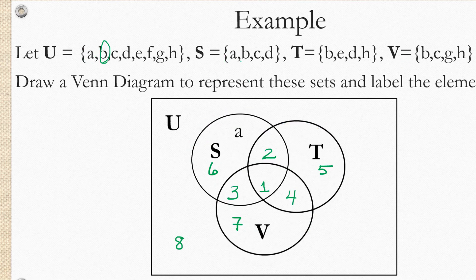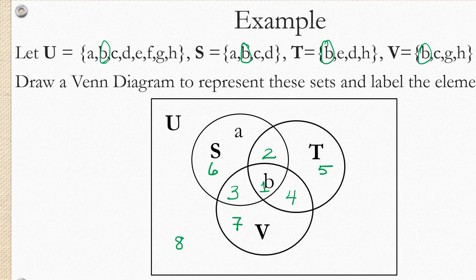Let's look at element B. Element B is in S, it's in T, oh, and it's in V as well. So we're going to have to place it in a region that's in all three sets. The only region that fits that description is the one in the very middle region one. We're going to put B there.